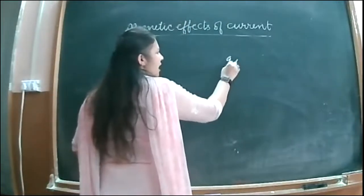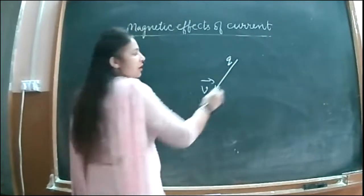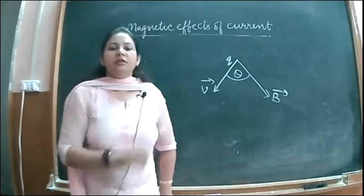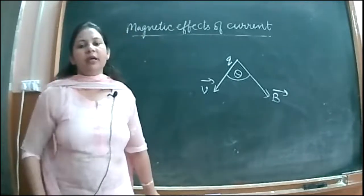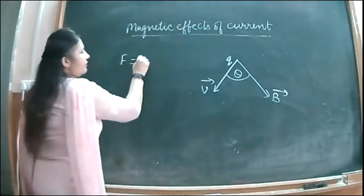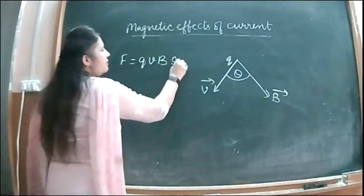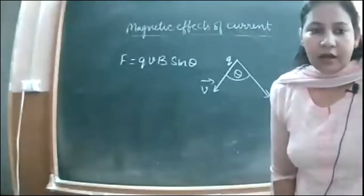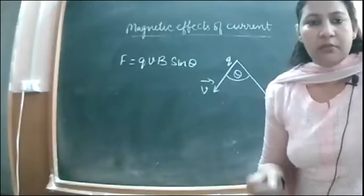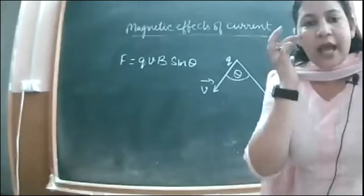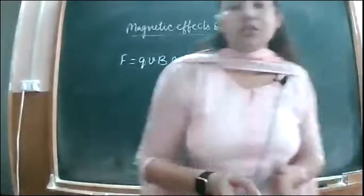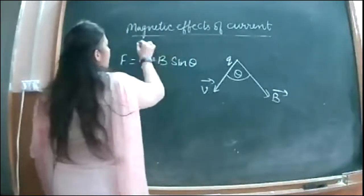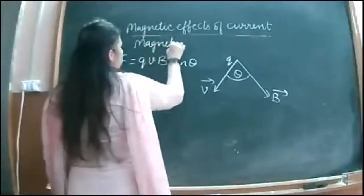Suppose there is a charge q moving with certain velocity v in one direction, and magnetic field B is acting in another direction with some angle theta between the velocity and the magnetic field. Then the force acting on it is given by the formula F = qvB sinθ, where q is the charge, v is the velocity, B is the magnetic field, and theta is the angle between velocity and magnetic field.